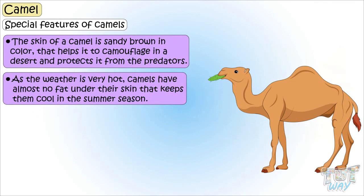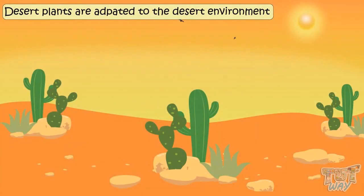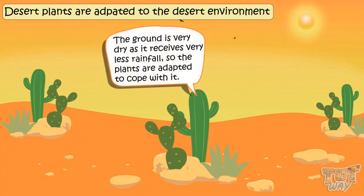So we see how camels are adapted for their hot and dry environment with thorny plants and very little or no water. Now let's see how desert plants are adapted to the desert environment. As the ground is very dry and receives very little rainfall, plants are adapted to cope with it.